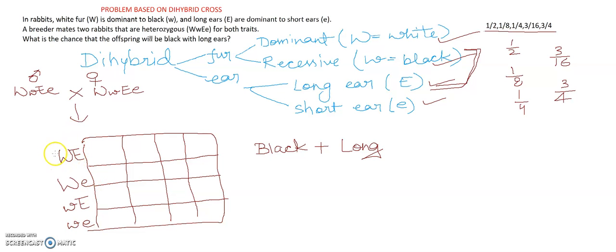These gametes represent DD, DR, RD, RR combinations. On one side I have taken the male gametes — capital W capital E, capital W small e, small w capital E, small w small e — and starting from the female side, the same gametes: capital W capital E, capital W small e, small w capital E, small w small e.